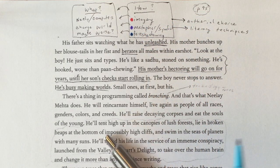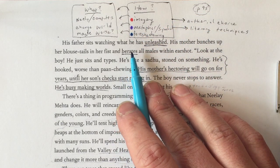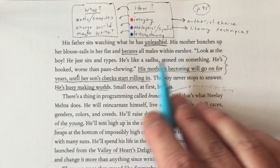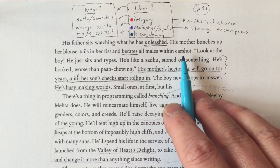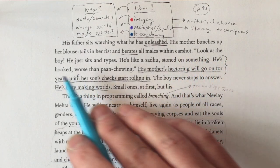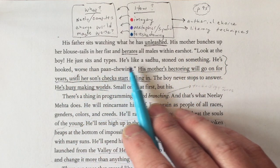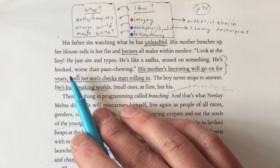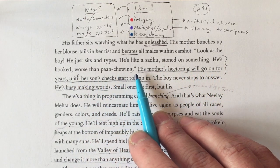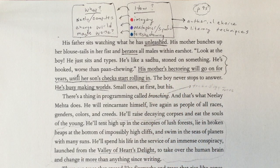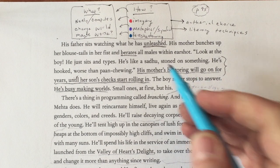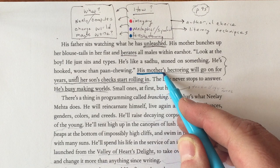I'm going to go through and read aloud and underline using my three different colors so I can tune you into why these three things in this particular excerpt, and how they add up to this meaning. All right: 'His father sits watching what he has unleashed. His mother bunches up her blouse tails in her fist and berates all males within earshot. Look at the boy — he just sits and types. He's like a sadhu stoned on something. He's hooked, worse than paan chewing.' His mother's hectoring will go on for years until her son's checks start rolling in. Foreshadowing.